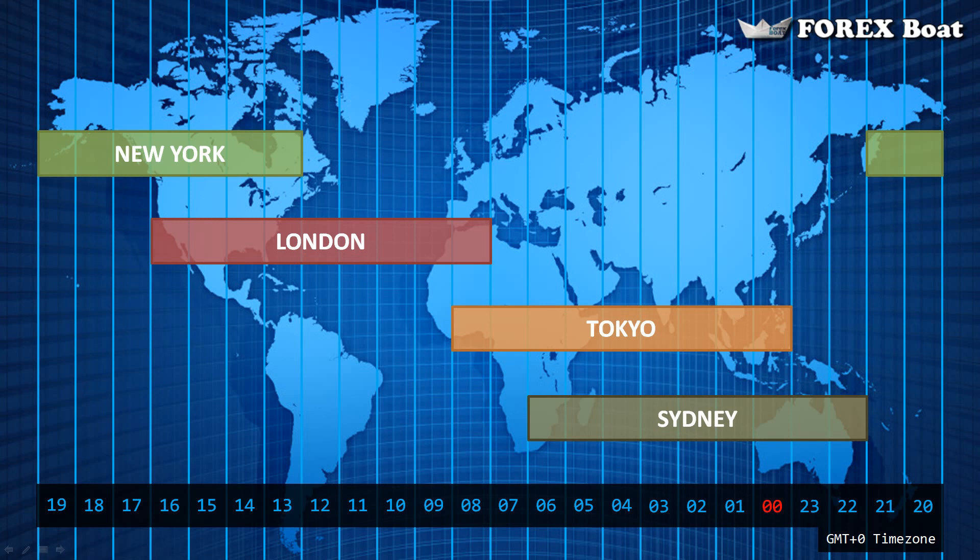New York and London are two of the world's biggest financial centers, and the American session starts when the European session is only halfway through. You're going to get an extremely fast-paced and volatile market during that overlap. A lot of the major pairs like the euro/dollar, pound/dollar, and the dollar/Swiss franc experience massive movements and specific patterns during this time.